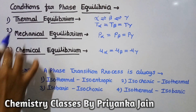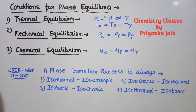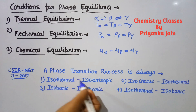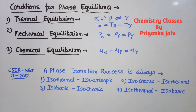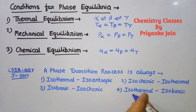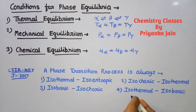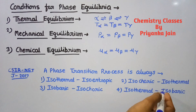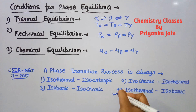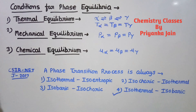This is relevant because a question on this topic was asked in the CSIR NET exam in June 2017. The question was: 'A phase transition process is always...' with four options. From the criteria above, we know that a phase transition process is isothermal and isobaric — meaning the temperature and pressure remain constant throughout. So that option is the correct answer, and knowing this topic makes such questions very easy to solve.